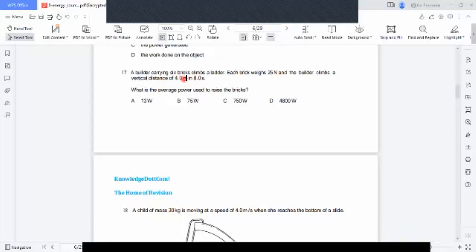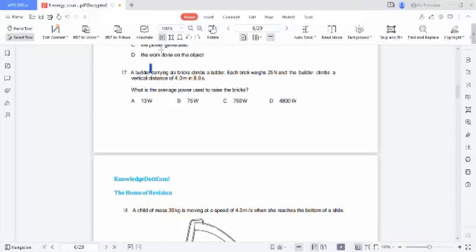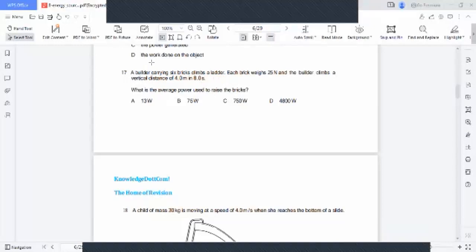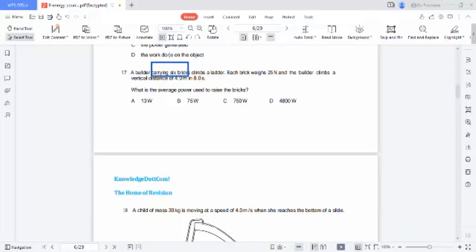A builder carrying six bricks climbs a ladder. Each brick weighs 25 Newtons. The builder climbs a vertical distance of four meters, and the time taken is eight seconds. Let's calculate the total weight first.